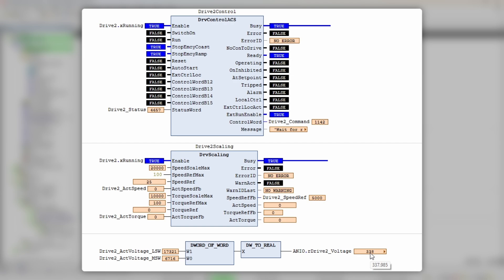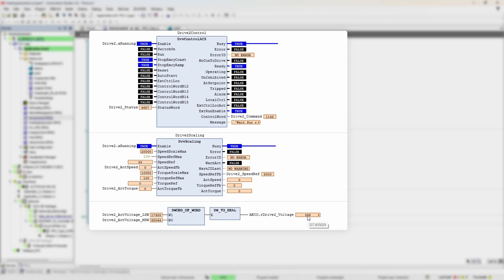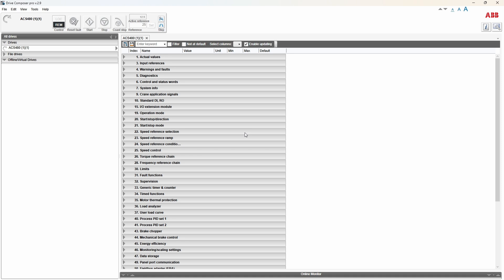Voltage value also seems to be converted properly. Two meaningless words are combined and then interpreted as a real value—337 point something volts. If you go to Drive Composer and check group 1 parameters, you will see something similar.